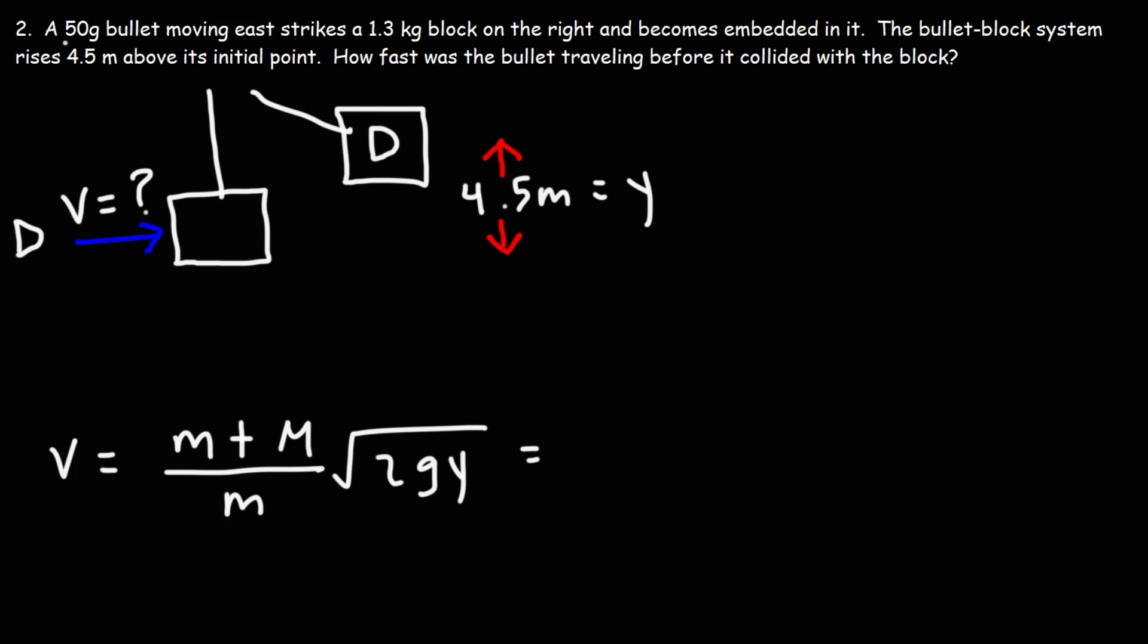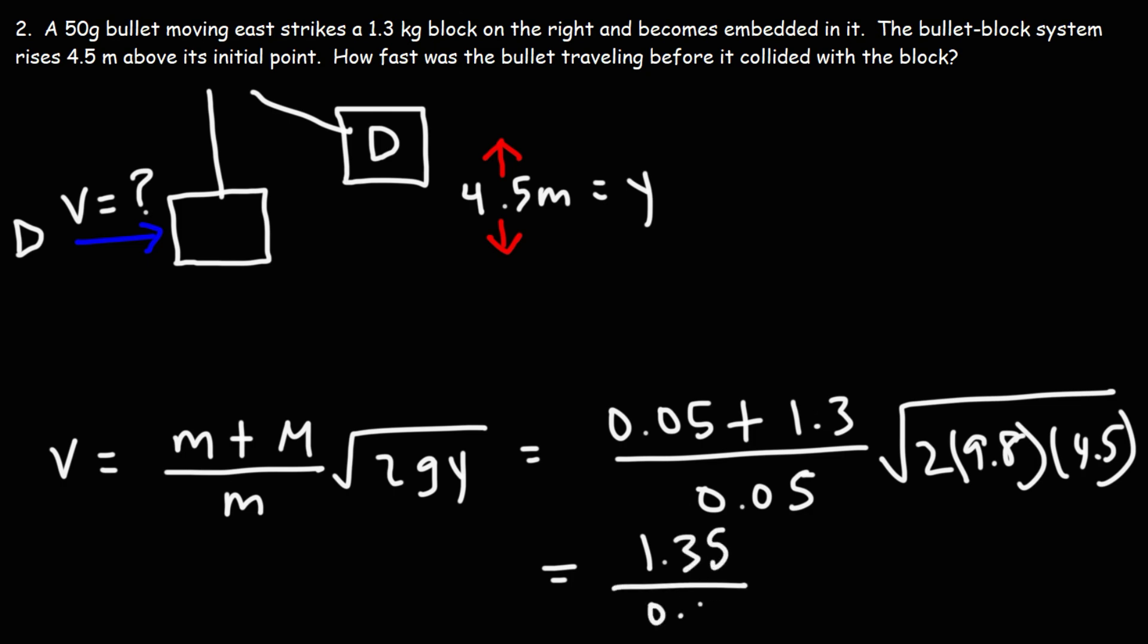So the mass of the bullet: we have a 50 gram bullet. If we divide that by a thousand, that's going to be 0.05 kilogram. The mass of the block is 1.3 kilograms divided by the mass of the bullet, times the square root of 2 times g times the height, which is 4.5. 0.05 plus 1.3, that's 1.35, divided by 0.05, 2 times 4.5 times 9.8, that's 88.2.